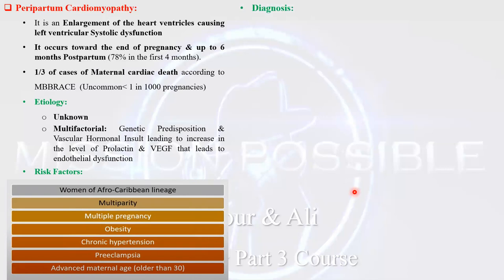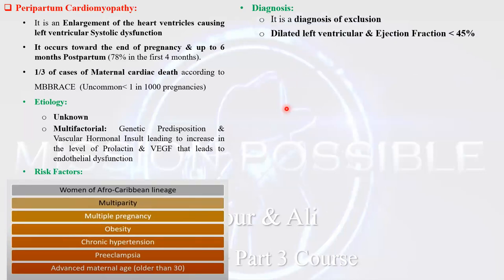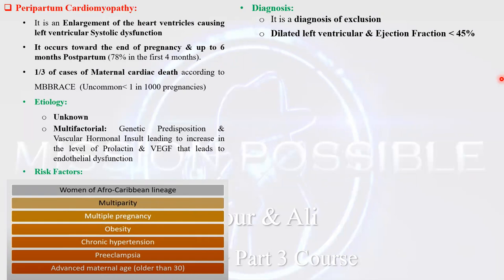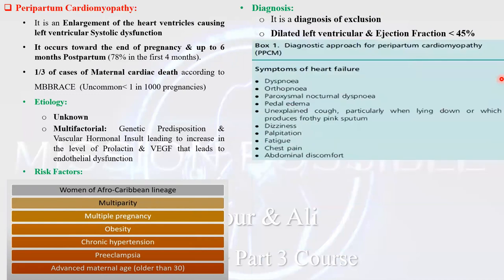Regarding the diagnosis, the timing will be around the end of pregnancy and up to six months postpartum. The diagnosis is a diagnosis of exclusion. The mandatory criteria are: presentation towards the end of pregnancy and up to six months postpartum, associated with dilatation of the left ventricle, and an ejection fraction less than 45% — these are the diagnostic criteria after exclusion of all other possible causes.